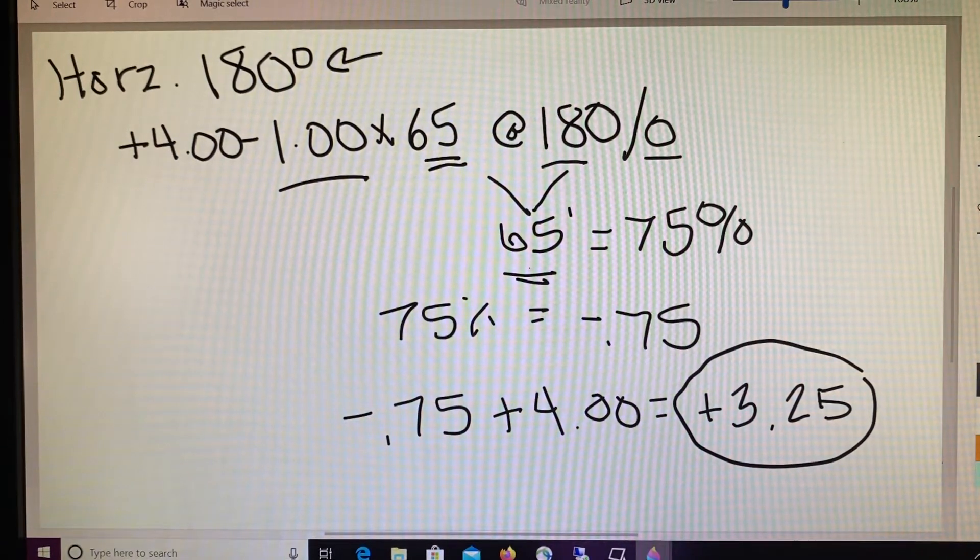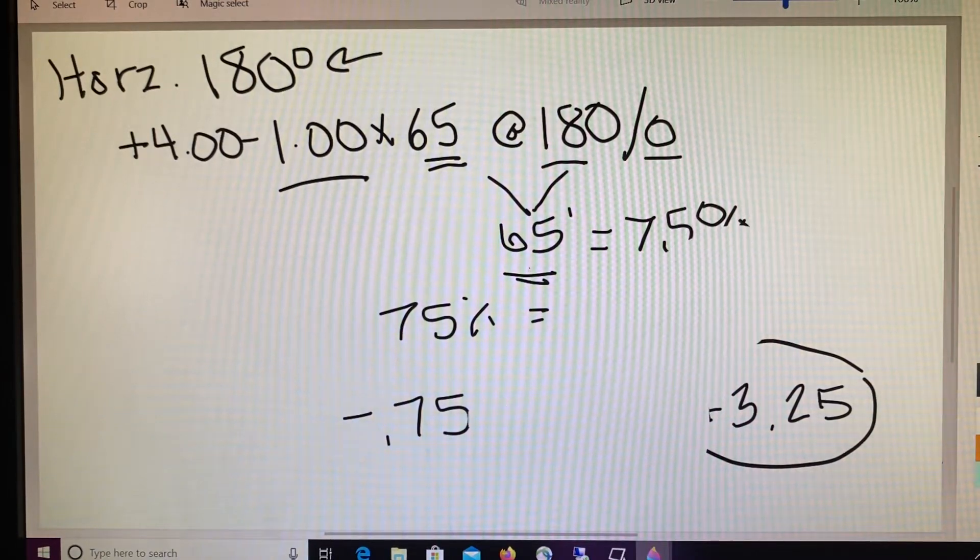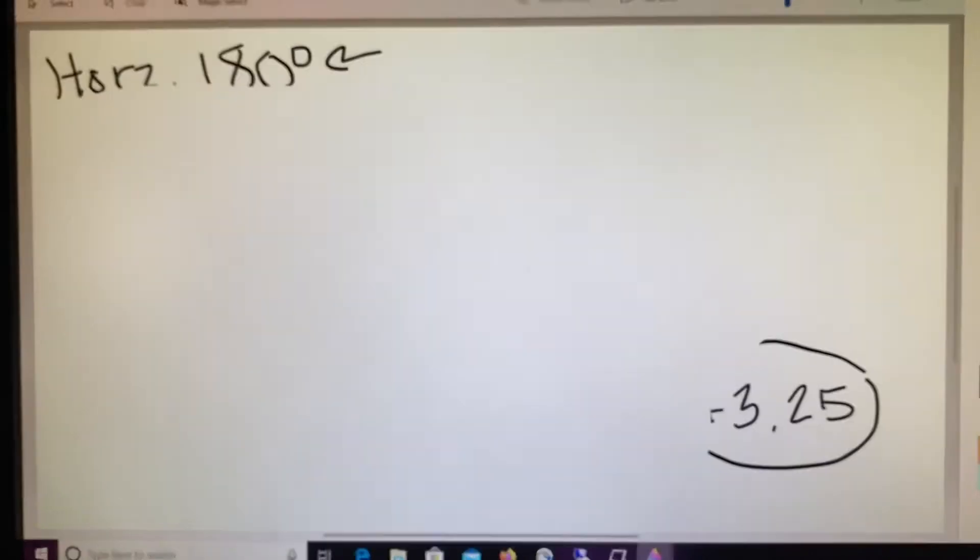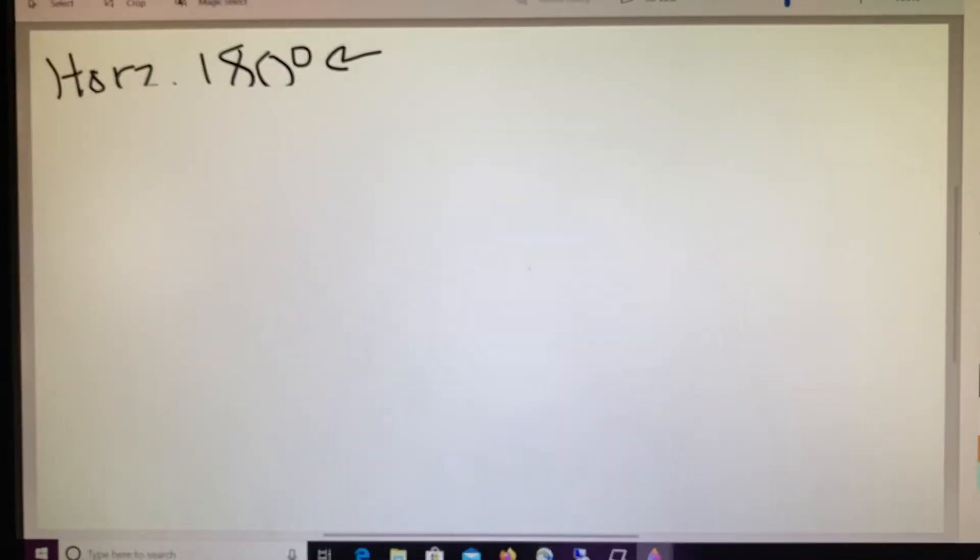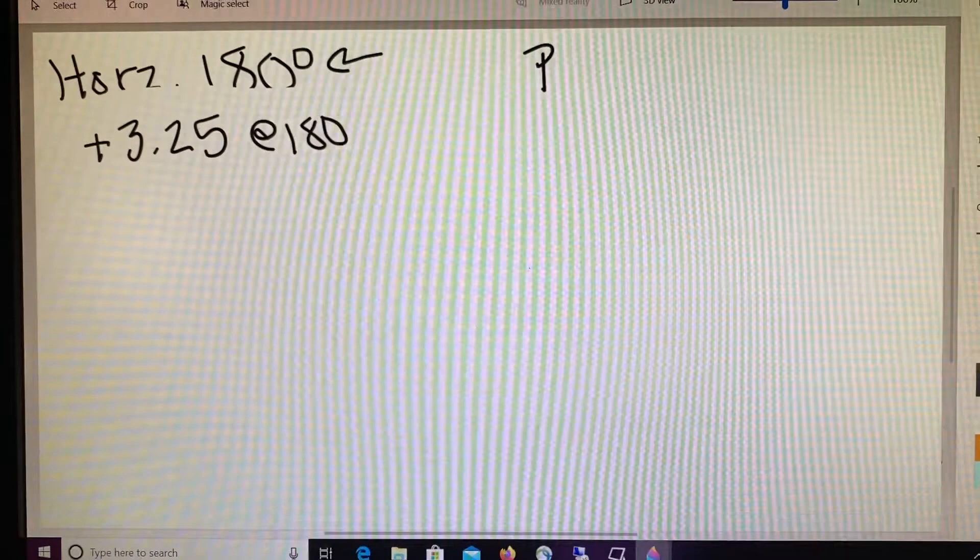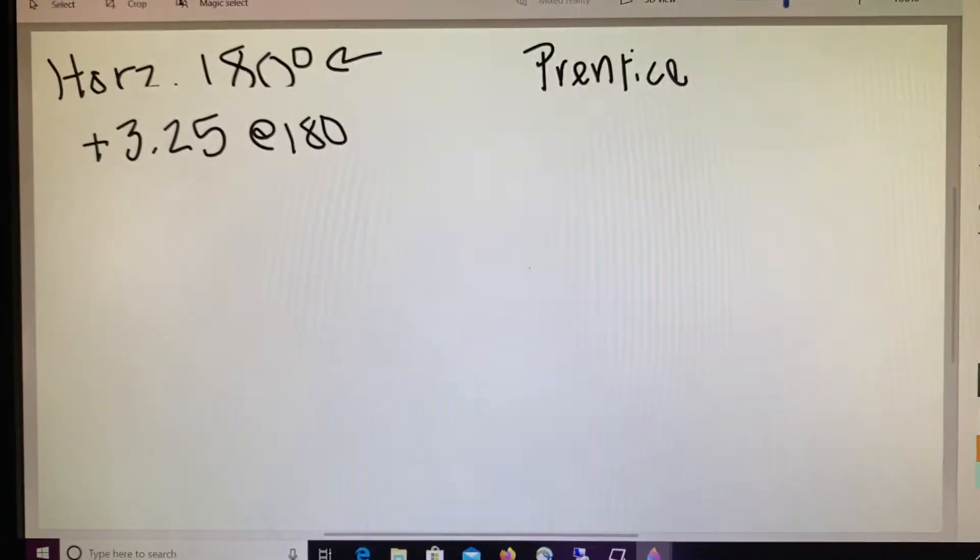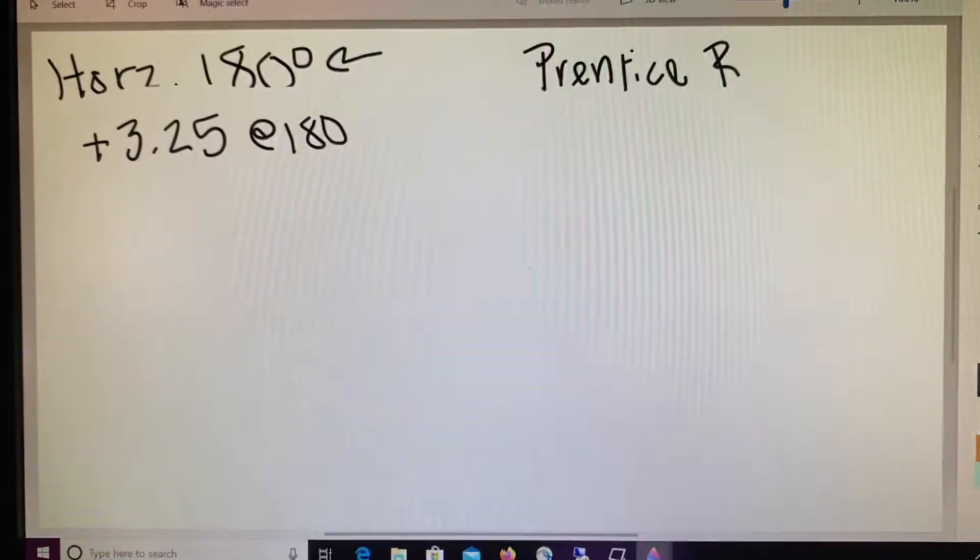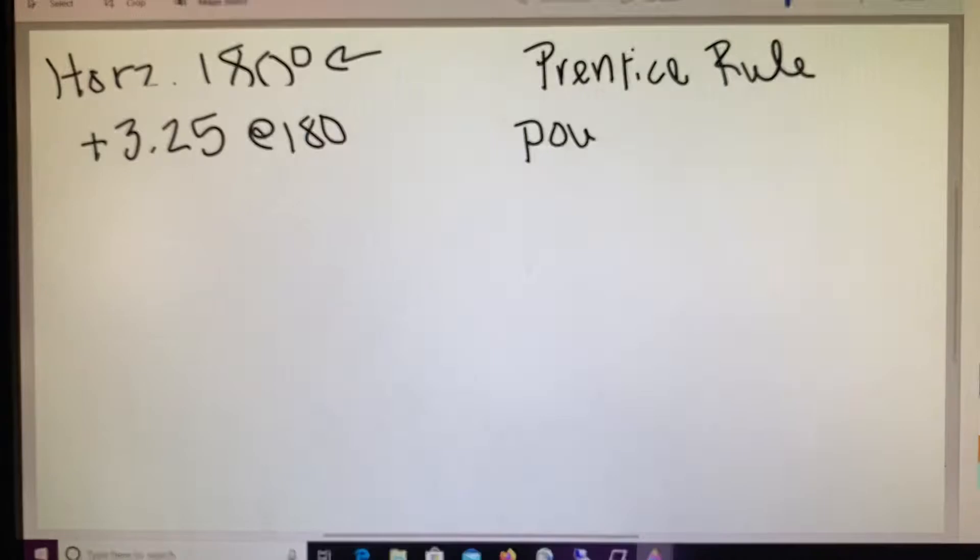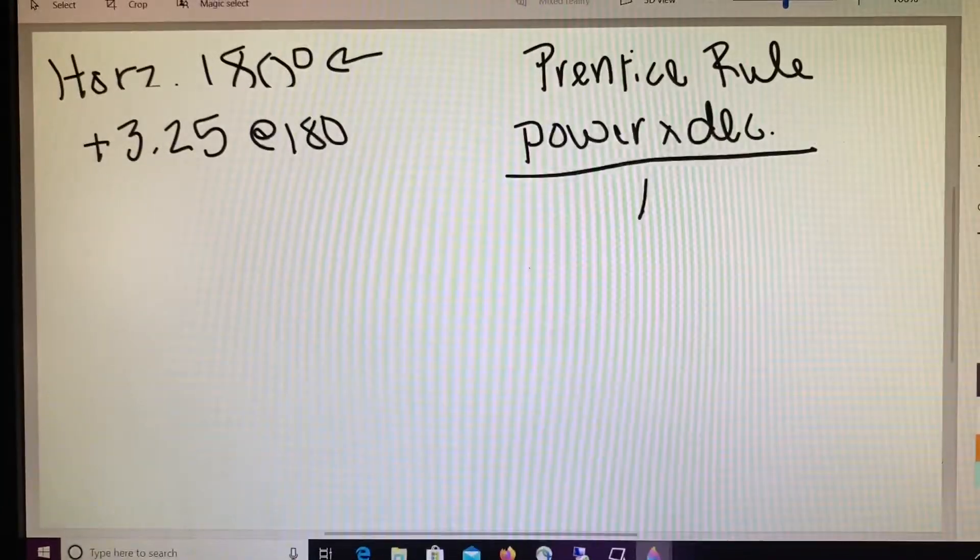So we have power because we're going to be working with what we would call the Prentice Rule. So let's get rid of some of this extra information here and let's go ahead and work through the next step of this process. So we have our power of 3.25 at 180. There's one piece of our puzzle. Now in the Prentice Rule, this is the equation that we'll be using to determine the amount of prism created by our error. So Prentice Rule, that is power times decentration or displacement divided by 10.